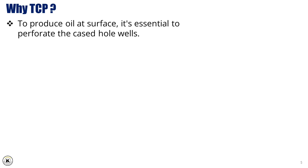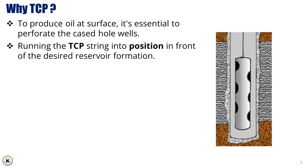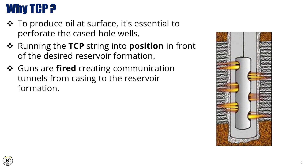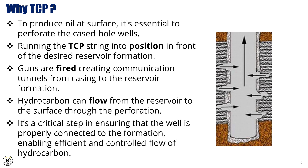To produce oil at surface, it's essential to perforate cased hole wells. Once the TCP string is successfully run into position in front of the desired reservoir formation, the next step is to fire the guns. This action creates communication tunnels, or perforations, that go from the casing directly into the reservoir formation. These tunnels provide a pathway through which hydrocarbons can flow from the reservoir to the surface, allowing for production to begin. It's a critical step in ensuring that the well is properly connected to the formation, enabling efficient and controlled flow of hydrocarbons.